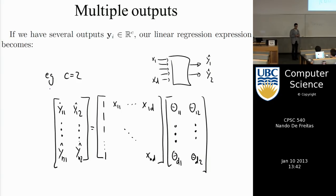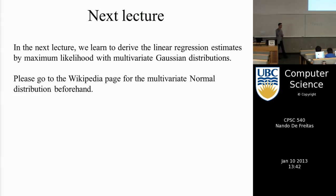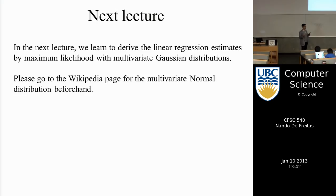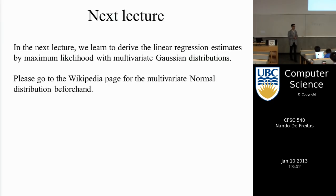That's linear prediction. In the next class we'll do the same problem from a completely different perspective — I'll introduce probability. I mentioned there were errors for each point and a question of uncertainty. The right way to manage uncertainty is through probability. We'll need to introduce the multivariate normal distribution — I strongly encourage you to look at the Wikipedia page before the next class.